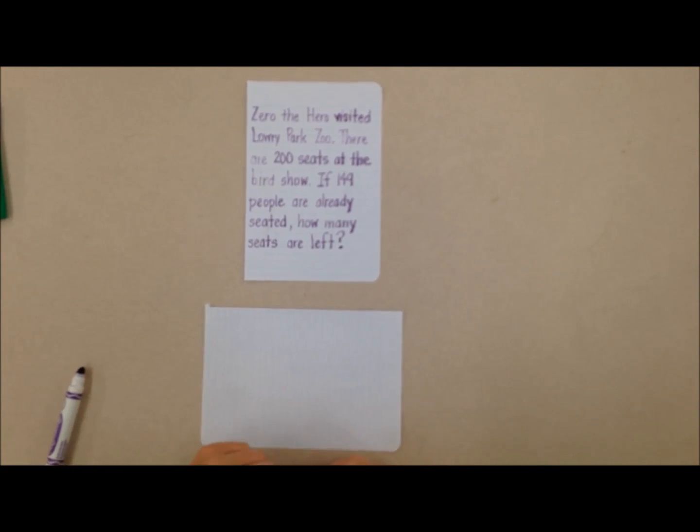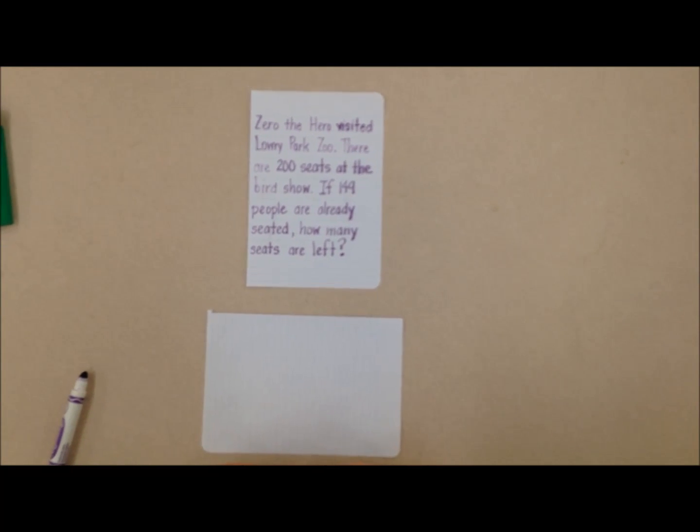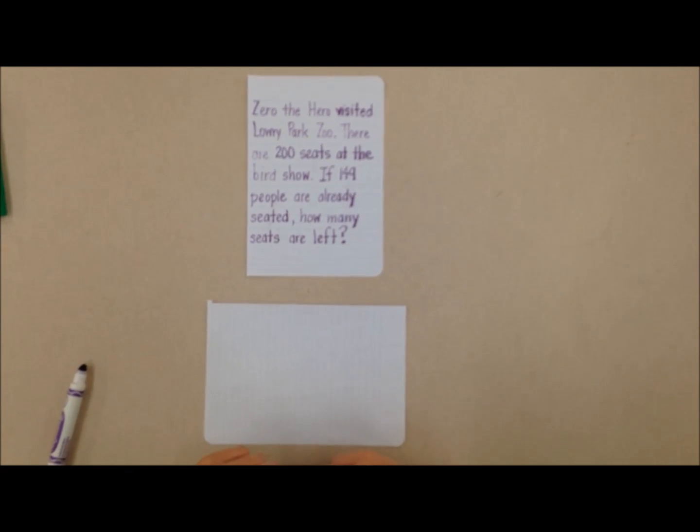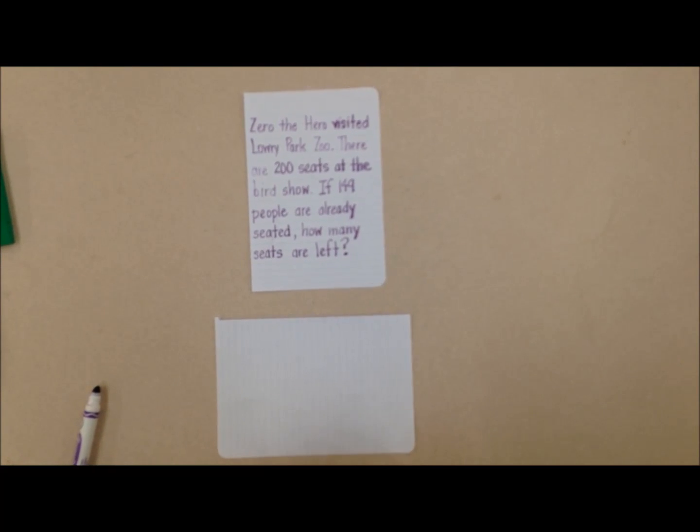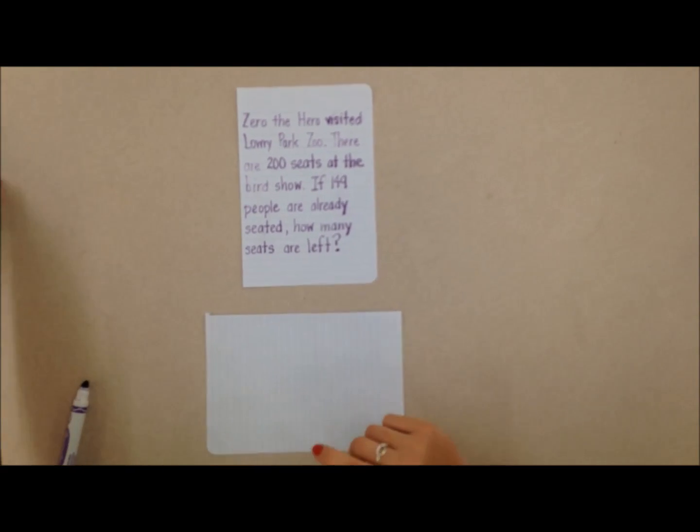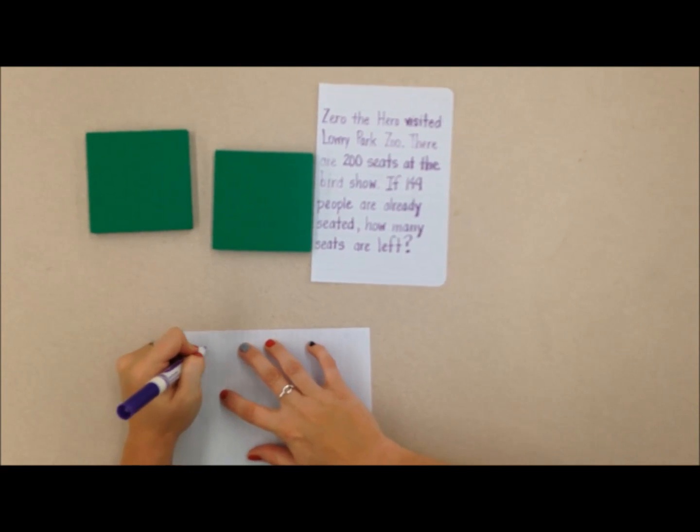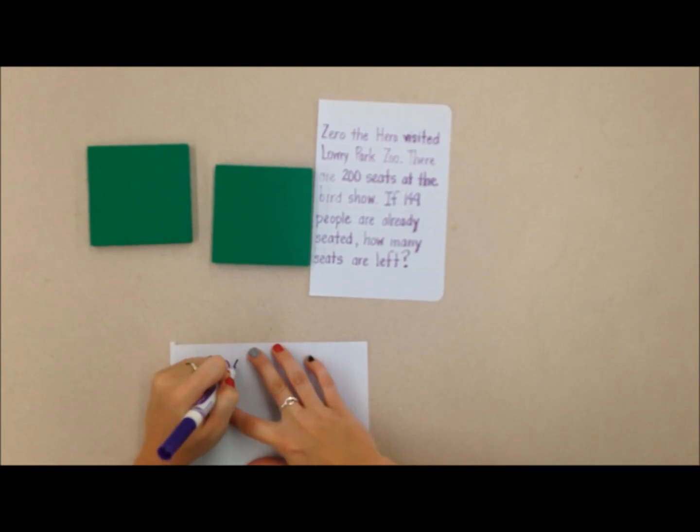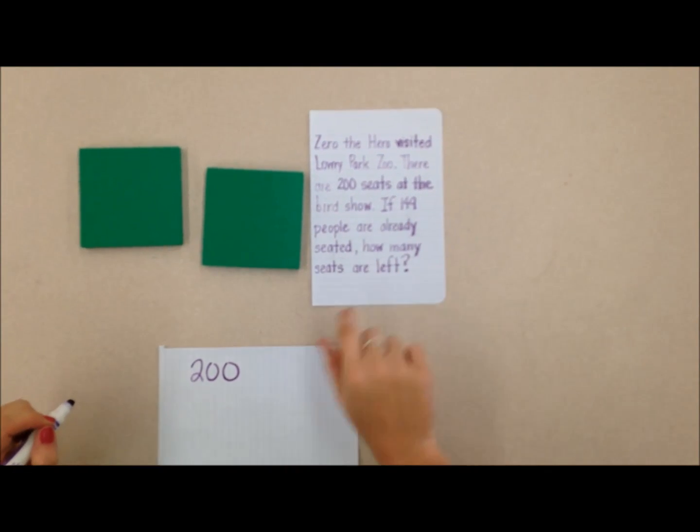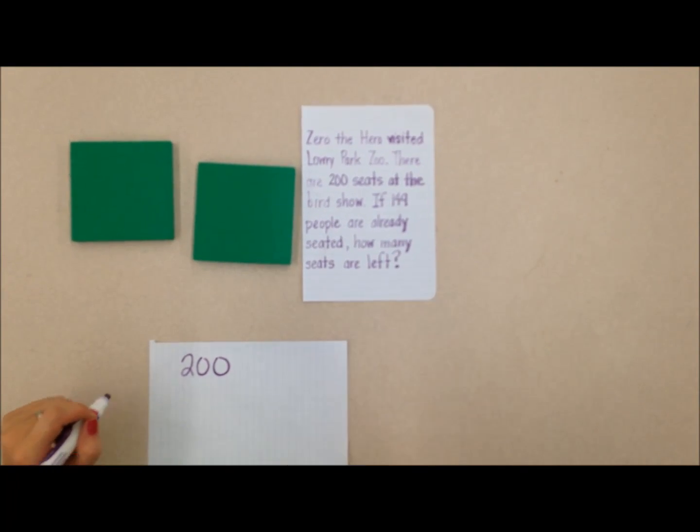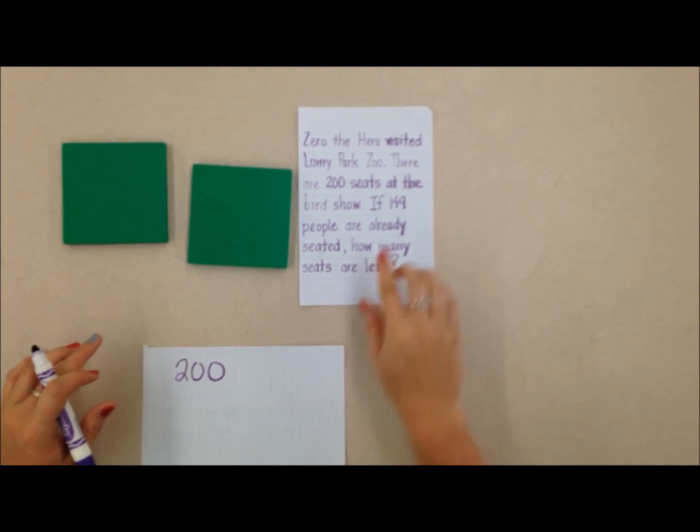Zero the hero visited Laurie Park Zoo. There are 200 seats at the bird show. If 149 people are already seated, how many seats are left? Okay, so I know that I have 200 seats at the bird show and there's 149 people already seated. So I'm trying to figure out how many seats are left, so I'm going to subtract the people that are already seated to figure out how many are left.